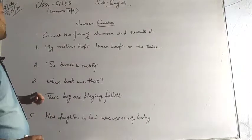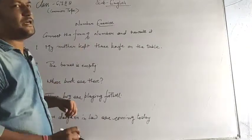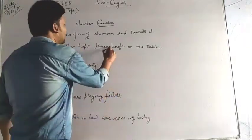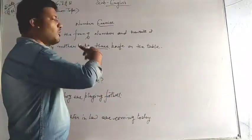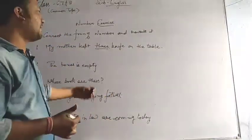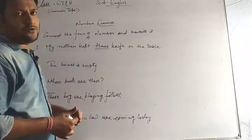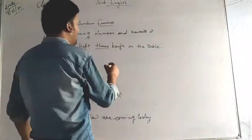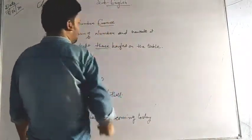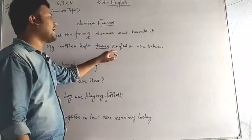So to solve the first one: my mother kept three knife on the table. Now I can see the word three is given. Three is more than one, it becomes plural, and knife is there. So knife is singular. How to make it plural? I simply put S and the sentence is right. My mother kept three knives on the table and not knife.